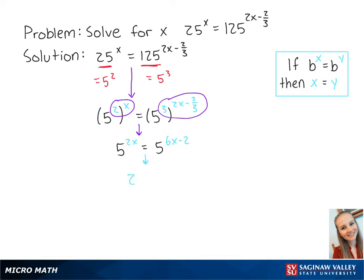we now have 2x equals 6x minus 2. If we subtract 6x from both sides of the equation, we get negative 4x equals negative 2. Now we divide both sides by negative 4 to get x equals 1 half. This is the final answer.